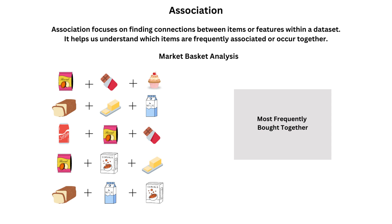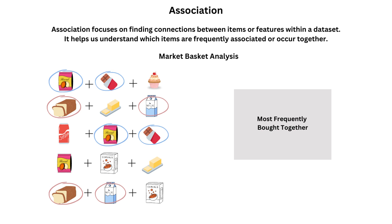For example, we are given this dataset shown on the screen of items bought by customers on a particular day. The items include biscuits, cupcake, chocolate, milk, spray, butter, soda and cereals. Using association algorithms, we try to find the items bought together most frequently. Notice that if a customer buys spray, they will likely grab a packet of milk, and if a customer buys biscuits, they will probably indulge in chocolate. This analysis will help the store owner keep the items most bought together closer to each other. This is a simple example of association.